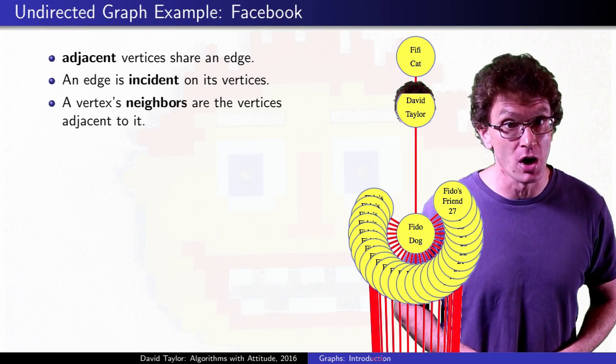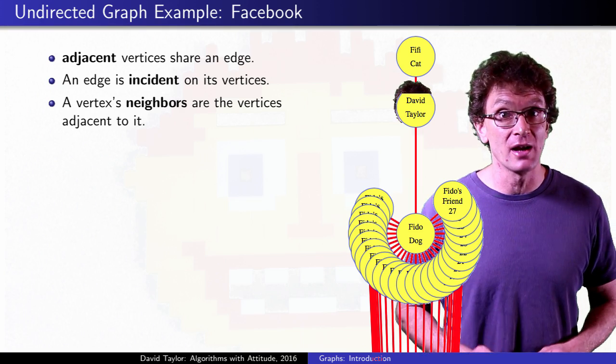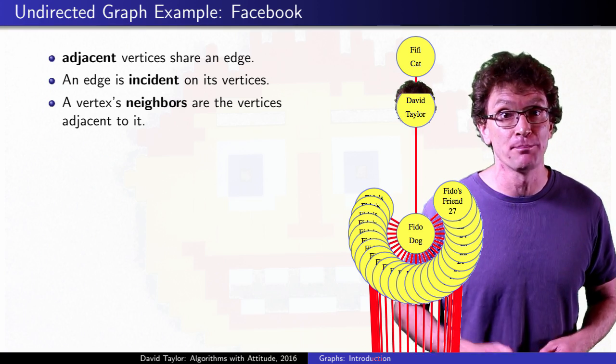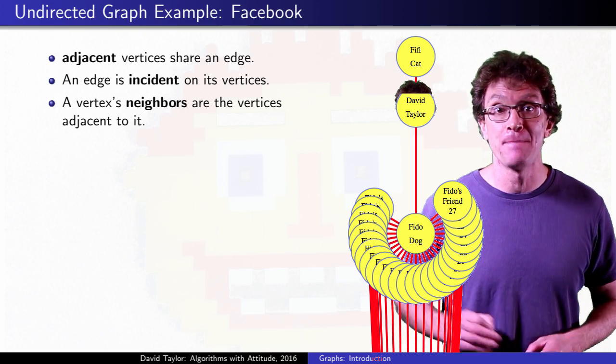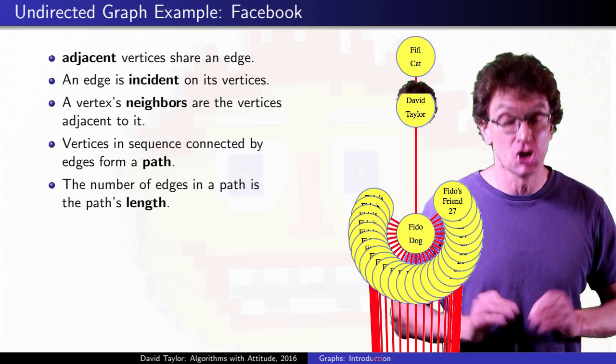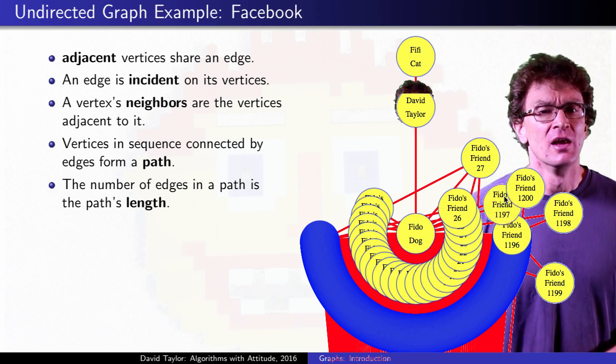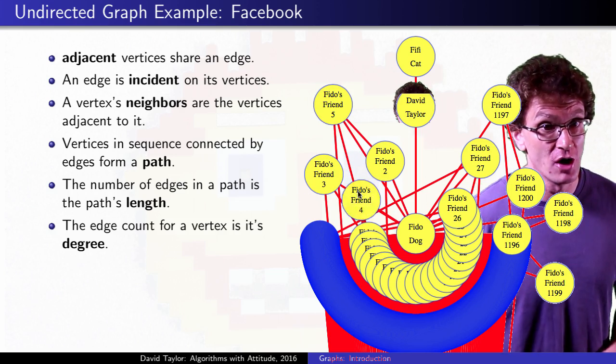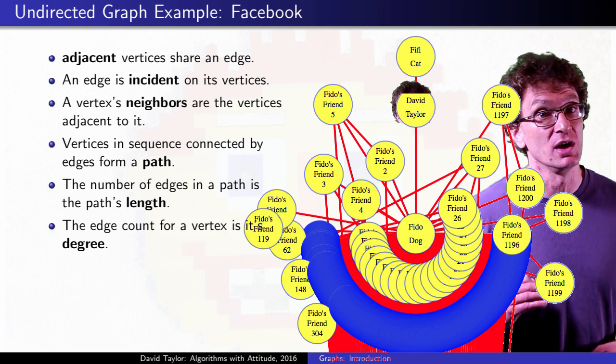Those are your vertex neighbors in the graph. For me, that's just my dog and my cat, but I change my settings so that friends of friends can see my posts. That adds all vertices on a path of length 2 away from me, which is much better because my dog has 1200 friends. His vertex has degree 1200, my vertex has degree 2.